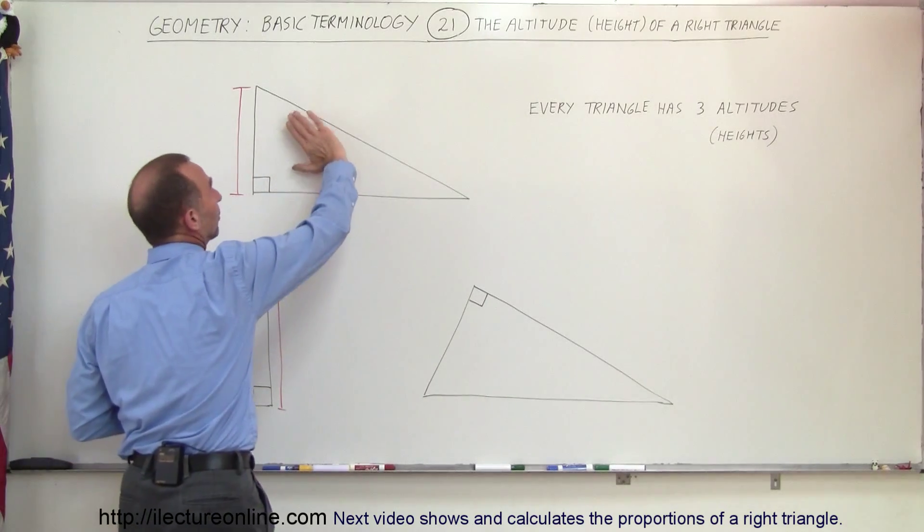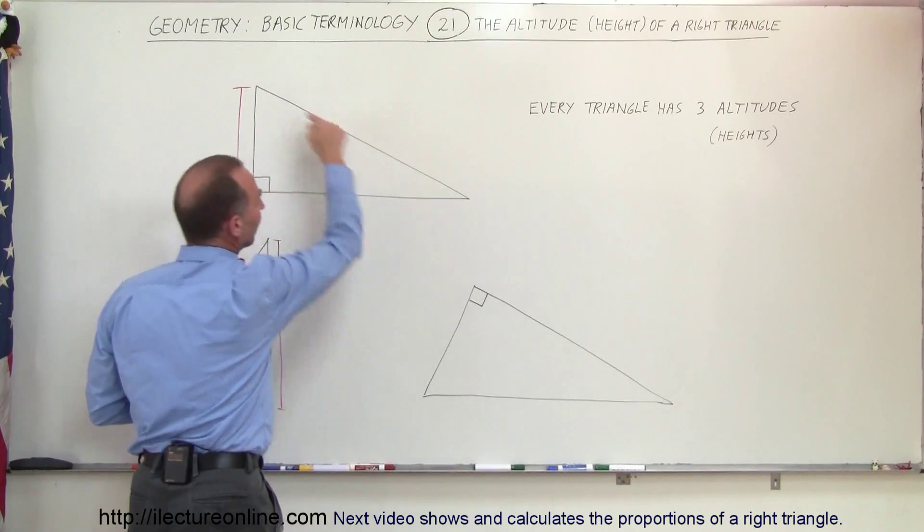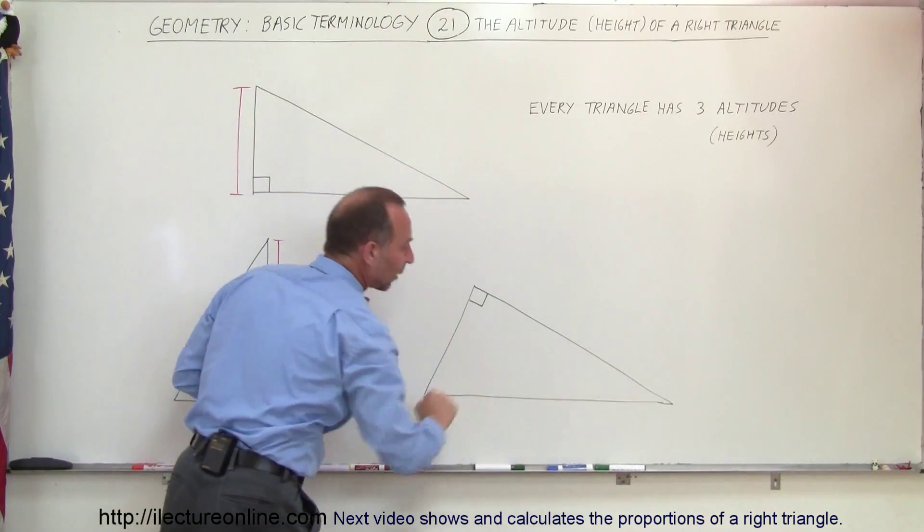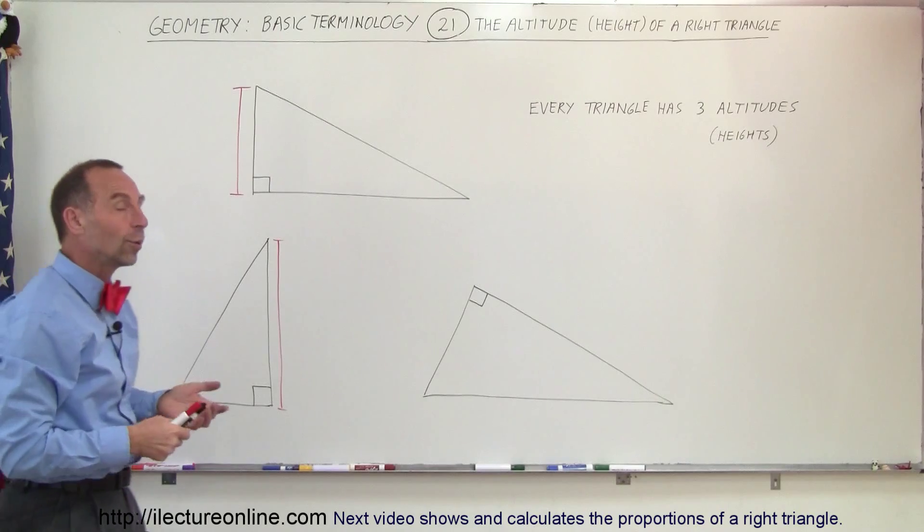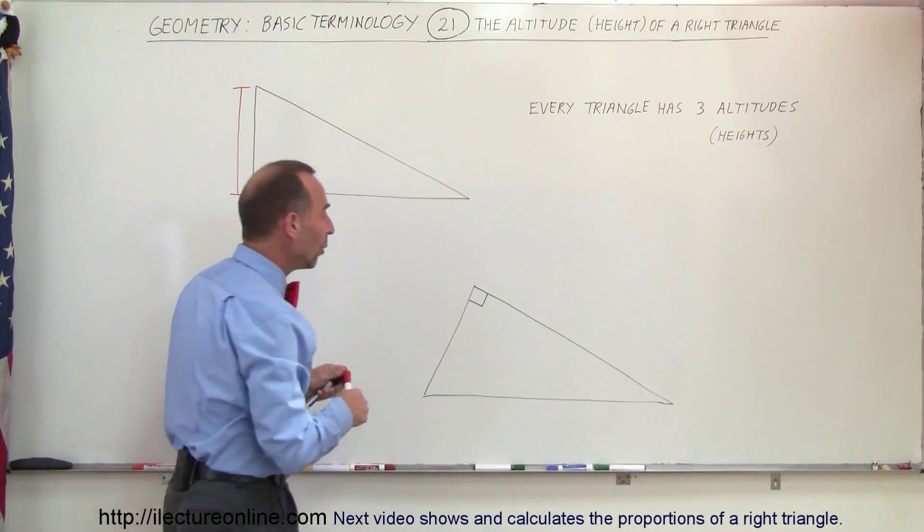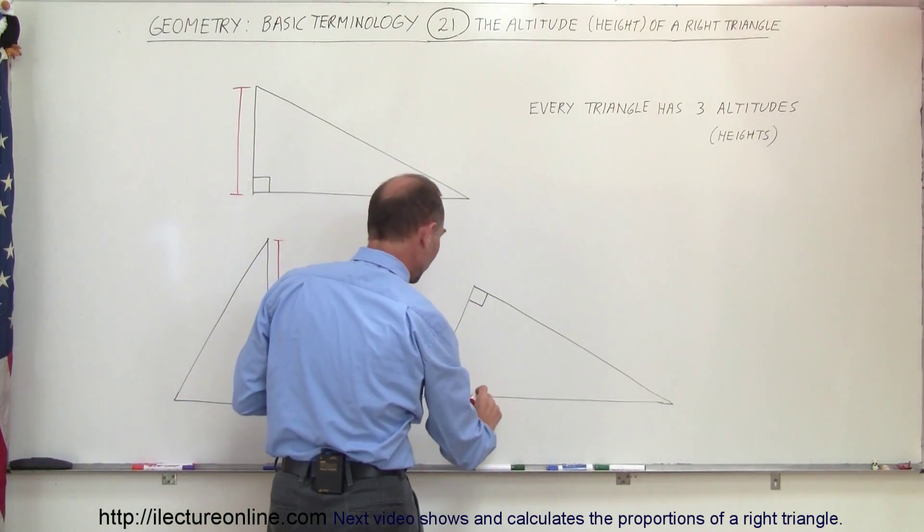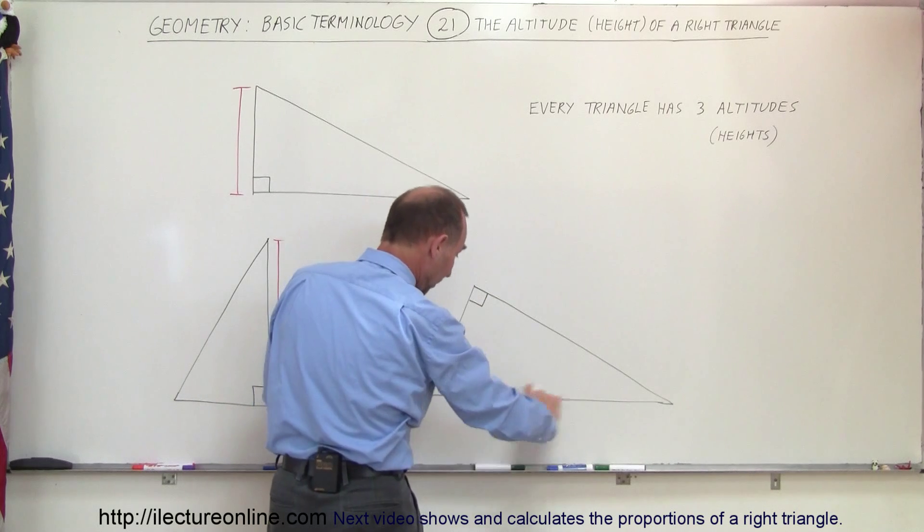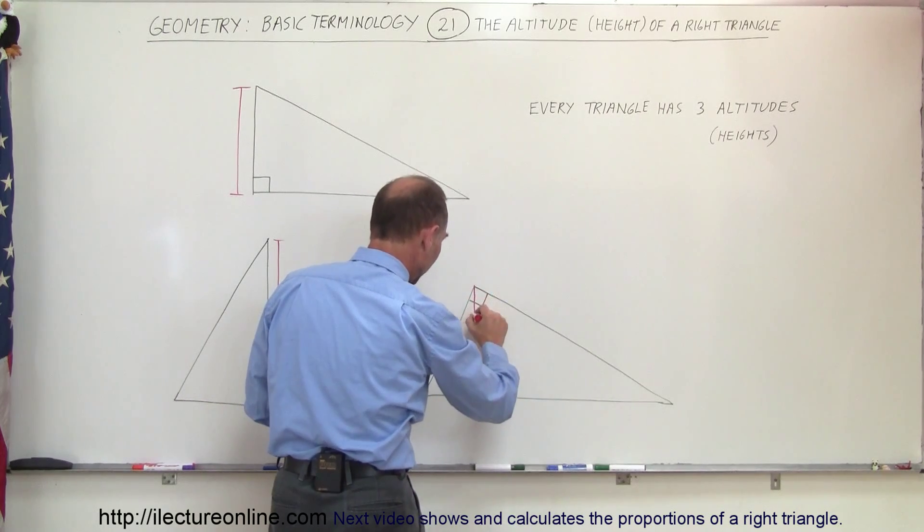Or if we take this right triangle and we turn it all the way around like this so that the hypotenuse is now horizontal right here, what is the height of the triangle or what is the altitude of the triangle now? Well, it would be the distance from the base here, or the hypotenuse, to the vertex right there, this vertical line.